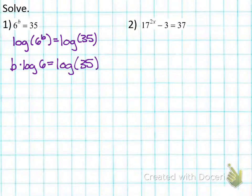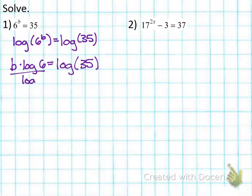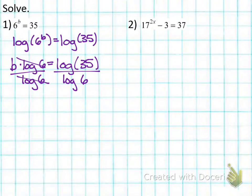Now I have a variable times log of 6 equals log of 35. Log of 6 is just a number — I could plug that in on my calculator and get some decimal answer. When we have a number being multiplied by a variable and we want to solve for that variable, we divide by the number. So I'm going to divide both sides of this equation by log of 6. The logs cancel out on the left-hand side, and I'm left with b equals log of 35 over log of 6.